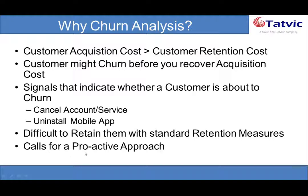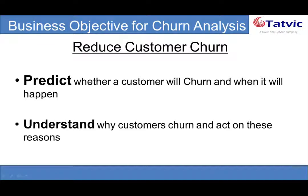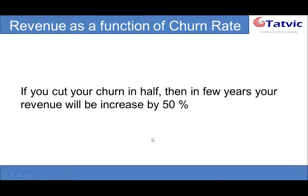So we require a proactive approach where we are able to identify churning customers very much in advance. Now we look at the business perspective that will be fulfilled by churn analysis, which is reducing customer churn. This will be achieved by firstly predicting whether the customer will churn or not, and secondly understanding why the customer will churn so that we can act accordingly. Let me also show the economic impact of churn on your business. It acts as an inhibitor to revenue growth. Hence, if we were able to reduce churn rate by half, this has a noticeable impact on your revenue.